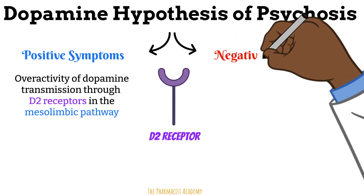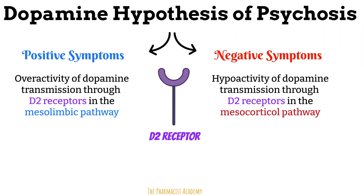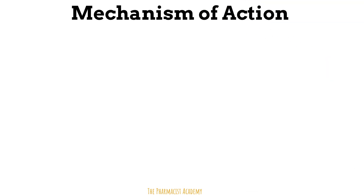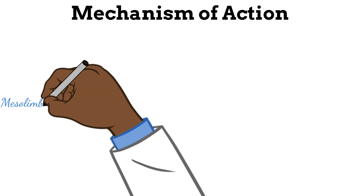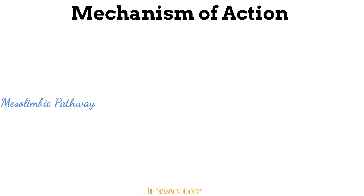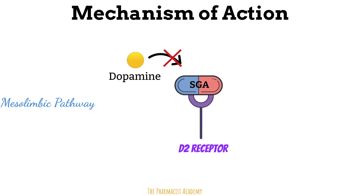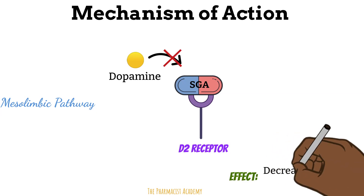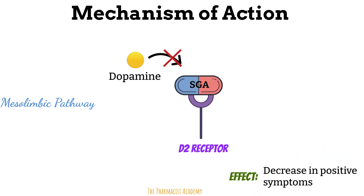For the negative symptoms, the dopamine hypothesis states that they are due to hypoactivity of dopamine transmission through the D2 receptors in the mesocortical pathway. So we understand what the problem is. Now let's discuss the mechanism of the second generation antipsychotics and how they fix this problem. Just like the first generation antipsychotics, the second generation antipsychotics exert their effects in the mesolimbic pathway where they occupy D2 receptors, preventing dopamine from binding to them, which leads to a decrease in positive symptoms.